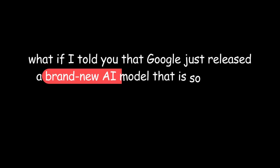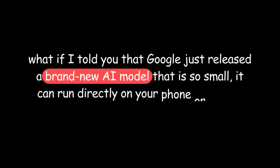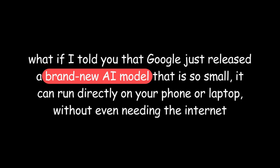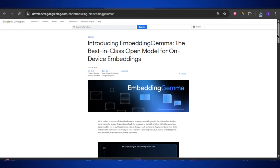What if I told you that Google just released a brand new AI model that is so small it can run directly on your phone or laptop without even needing the internet, and yet it's powerful enough to build much larger AI models? That's exactly what Google has done with their latest update called Embedding Gemma.